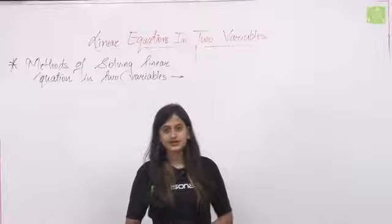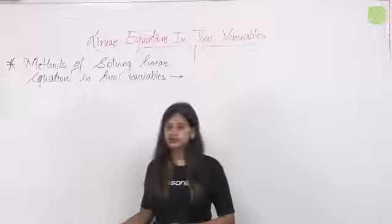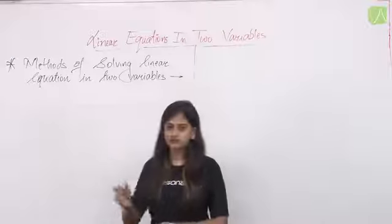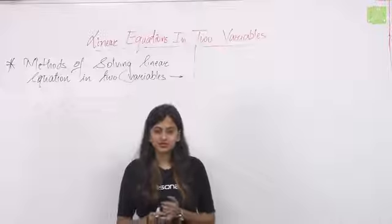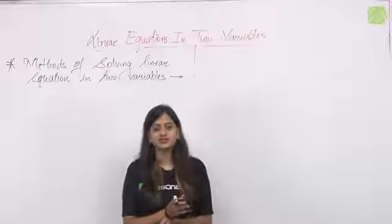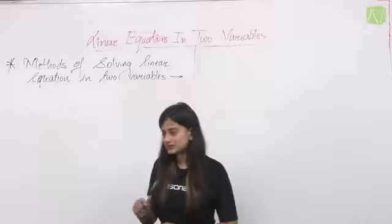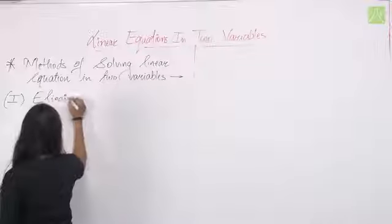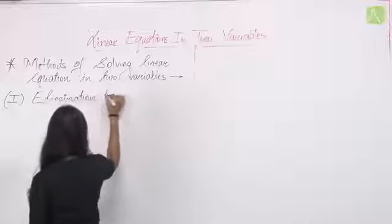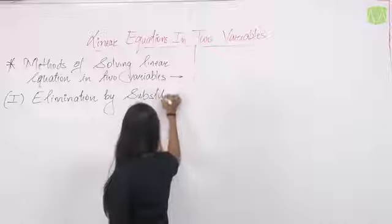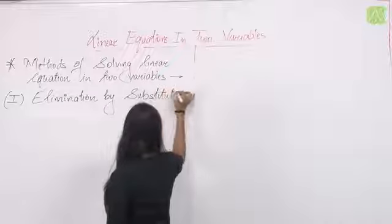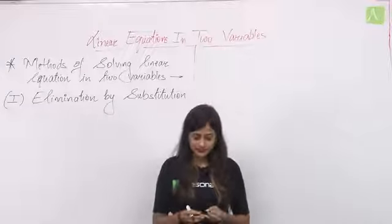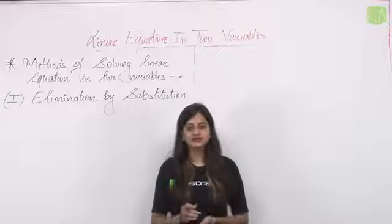Starting with this — in the last class, we already read about graphical methods of solving linear equations in two variables. Now we have three methods of solving: the first method is elimination by substitution, the second is elimination by equating the coefficient, and the third method is cross-multiplication.